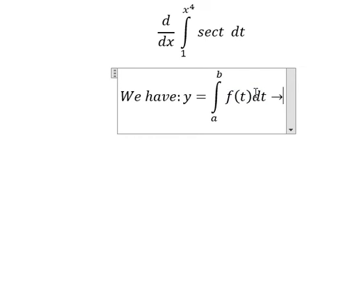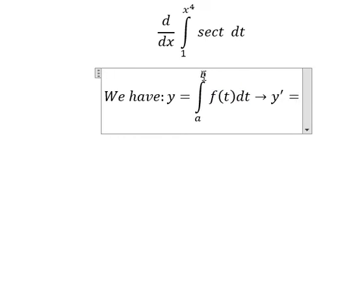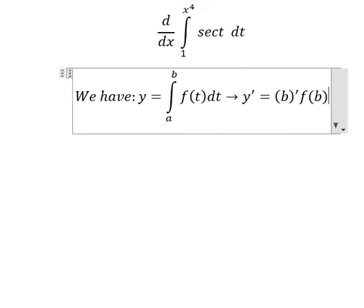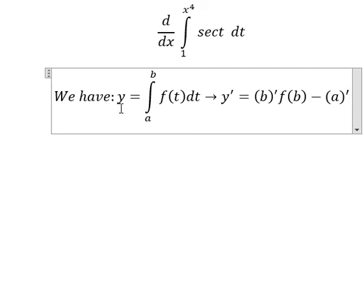So if we do first derivative of y, we need to do first derivative of b and the value of b will change for t. So we have f of b minus we do first derivative of a and the value of a will change for t.